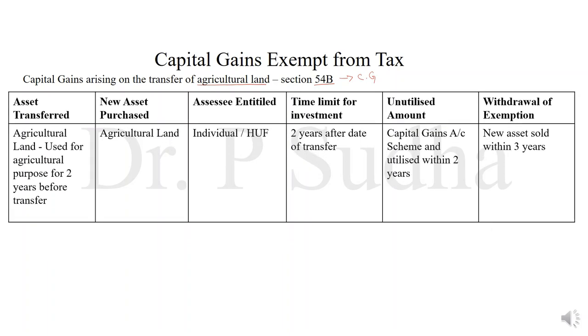Moving on to the next section — section 54B. As per this section, if there is any sale of agricultural land and a capital gain is earned, then if the assessee satisfies the following conditions, the capital gain will be exempted. The asset sold is agricultural land. This land should be used for agricultural purpose for at least 2 years before the date of sale. When this asset is sold, a capital gain will be there. If this capital gain is invested in purchasing a new agricultural land, then this amount will be exempted.